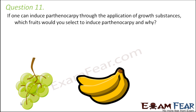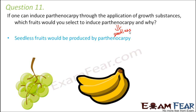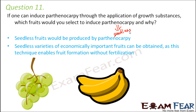Question number 11: If one can induce parthenocarpy through the application of growth substances, which fruits would you select and why? Parthenocarpy produces fruits without seeds, so we will get seedless varieties. We would try it on fruits which have seeds that we do not want — for example, grapes or bananas. Seedless varieties of economically important fruits can be obtained as this technique enables fruit formation without fertilization. Because fertilization does not happen, seeds are not formed, and the ovary ripens to form the fruit even before seeds form.